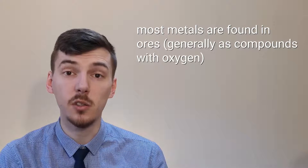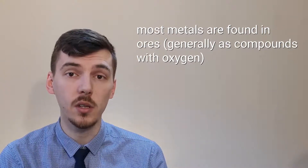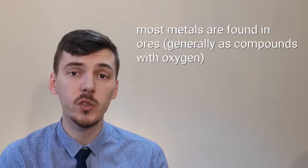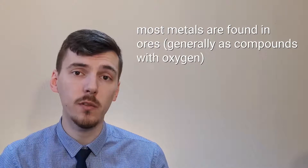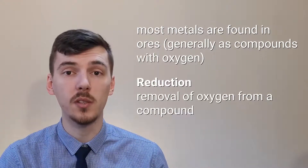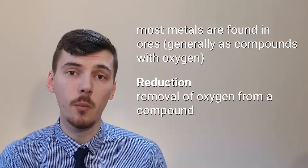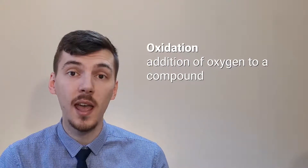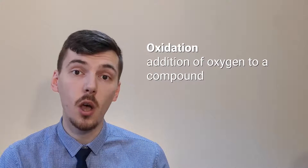Most metals do not occur naturally on their own. They normally occur in compounds, and that compound is normally made of the metal and oxygen. So when we want to take that metal out of the ground and use it, we have to remove the oxygen from the compound. We call that process reduction, because we're removing oxygen from the compound. For the metal to have formed a compound in the first place with oxygen, it has to have reacted with it, and we call that process oxidation.